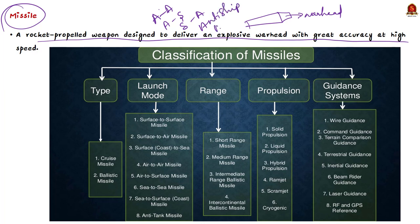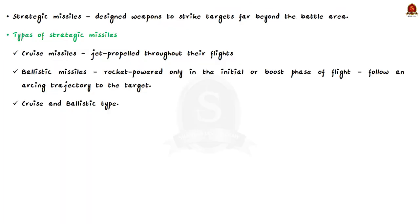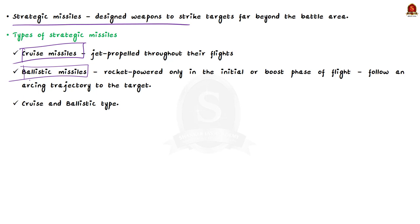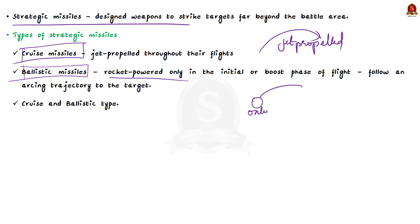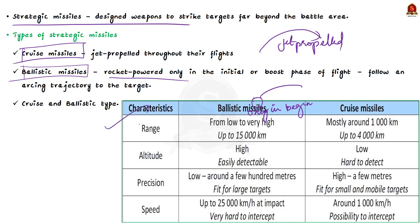Strategic missiles are weapons designed to strike targets far beyond the battle area. They are of two types: cruise and ballistic. Cruise missiles are jet-propelled throughout their flight, while ballistic missiles are rocket-powered only in the initial boost phase, after which they follow an arcing trajectory to the target.